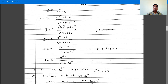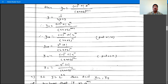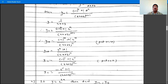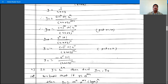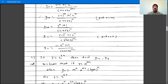Similarly, substitute n as 11 to find y11. So y11 is minus 1 raised to 11, times 11 factorial, times 2 raised to 11, divided by 2x plus 3 raised to 12. Since minus 1 raised to 11 is minus, y11 is minus 2 raised to 11 times 11 factorial divided by 2x plus 3 raised to 12.